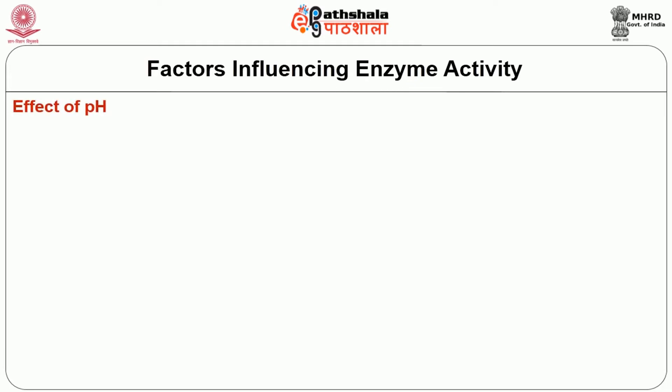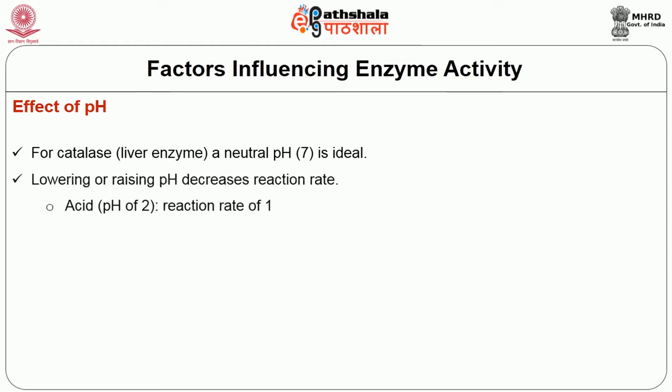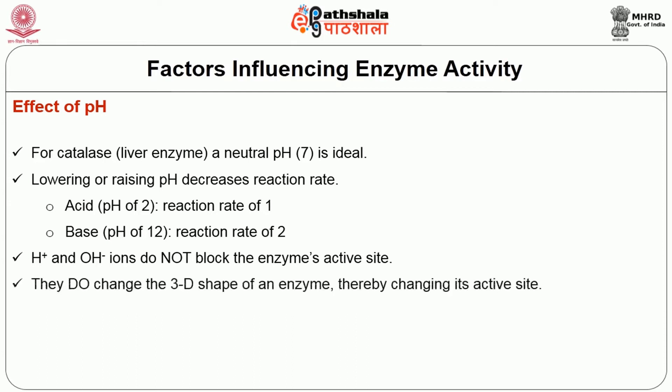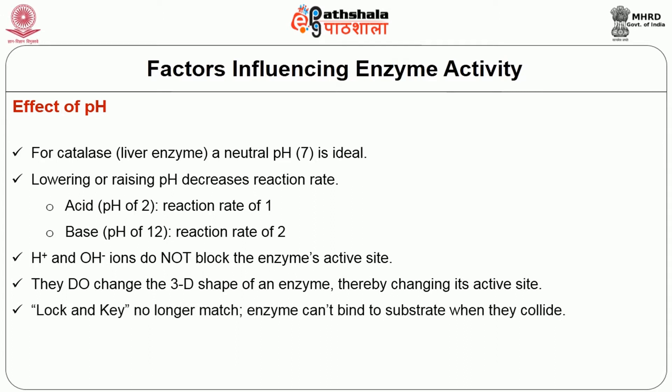Effect of pH: pH is the negative logarithm of hydrogen ion concentration and describes the acidic or basic nature of the environment in which the enzyme acts. For catalase, a liver enzyme, the optimum pH is neutral — pH 7. Lowering or raising the pH above 7 decreases the reaction rate. H⁺ and OH⁻ ions do not block the enzyme's active site; however, they change the 3D shape of the enzyme, thereby changing its active site, so the enzyme can no longer bind to its substrate.